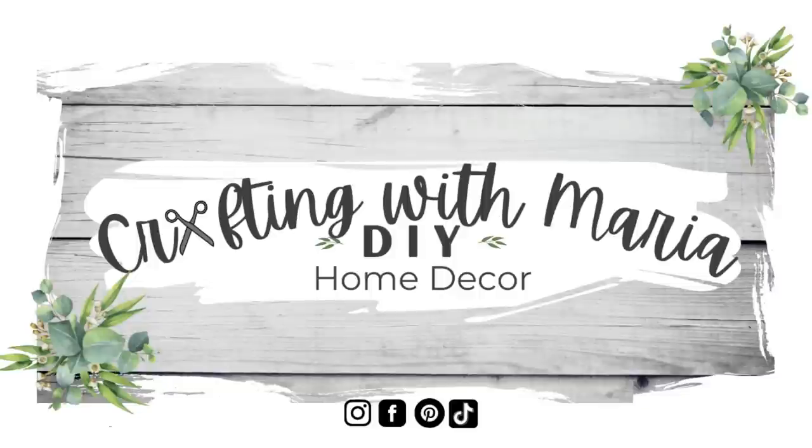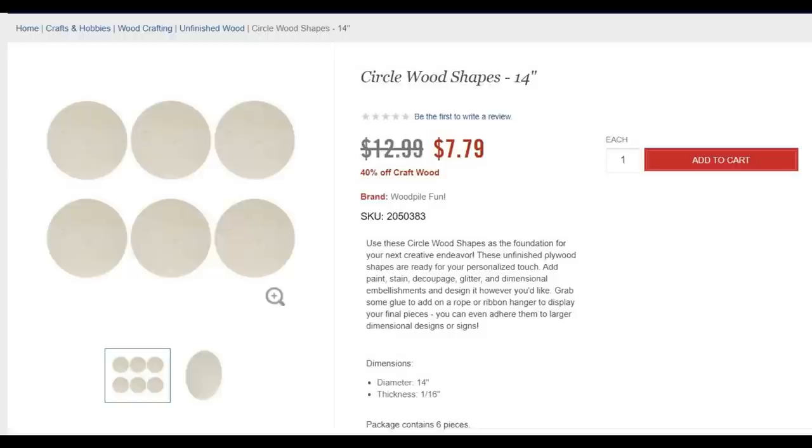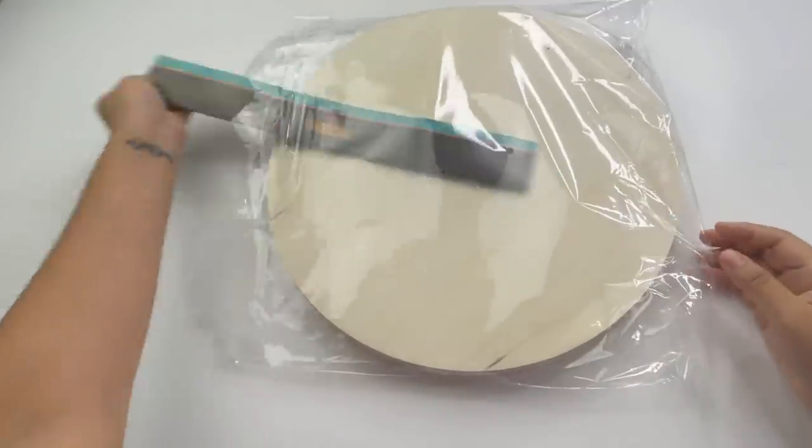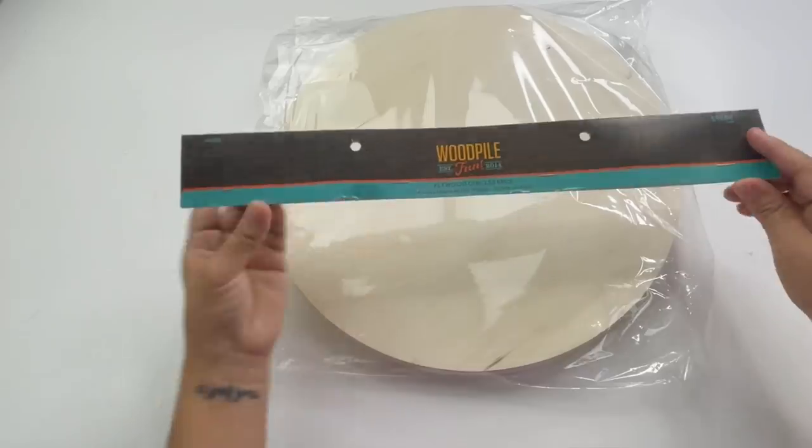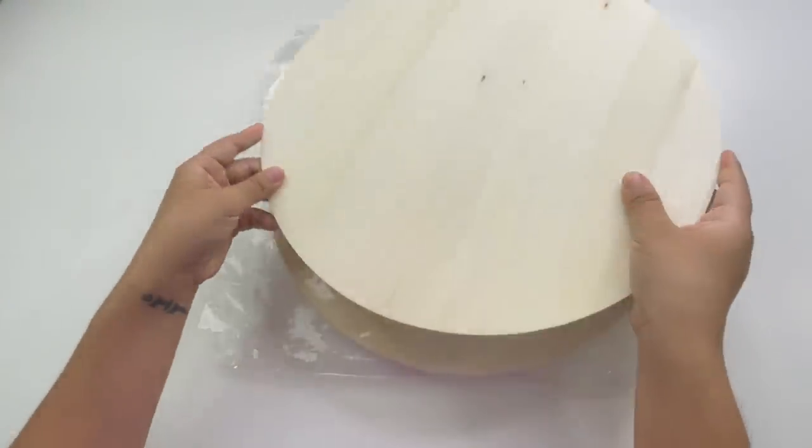Hello everyone, welcome back and thank you for watching. In today's video I will be using these Hobby Lobby 14-inch wood circles. Six come in the pack for $12.99, but they usually have them on sale for 40% off, so they come out to $7.79, which is not bad. Starting with my favorite project, I will be using one of these wooden round circles.